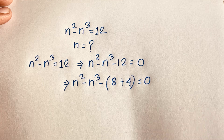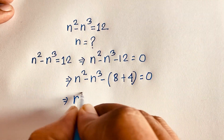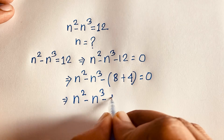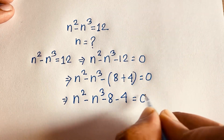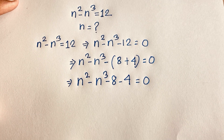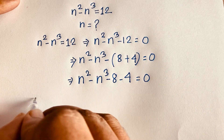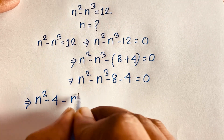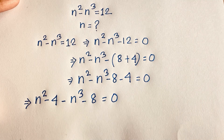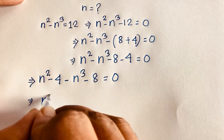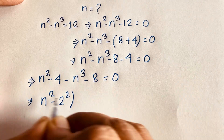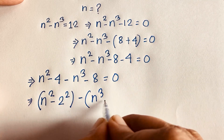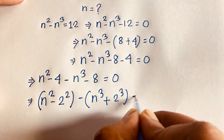In this expression we have n squared minus n cubed, and we rewrite minus 12 as minus 8 plus minus 4, giving us n squared minus 4, minus n cubed minus 8, equal to 0. Here we recognize that 8 is 2 to the power 3.